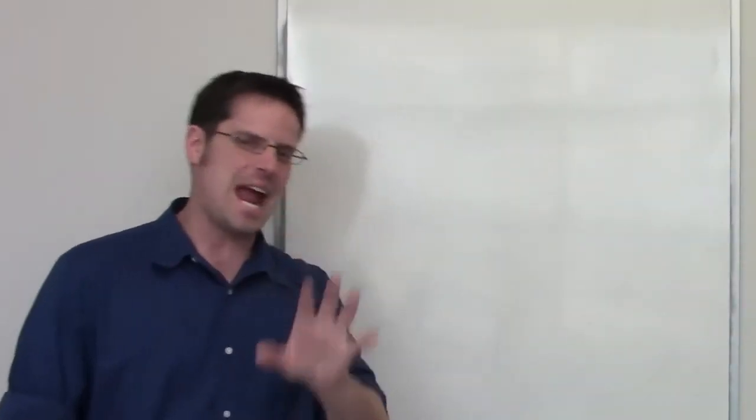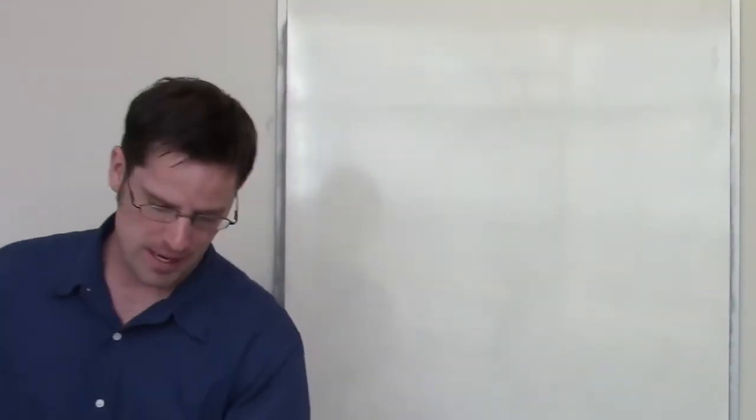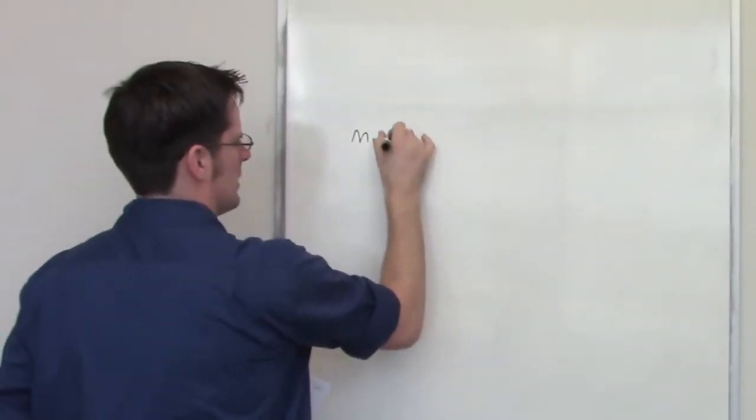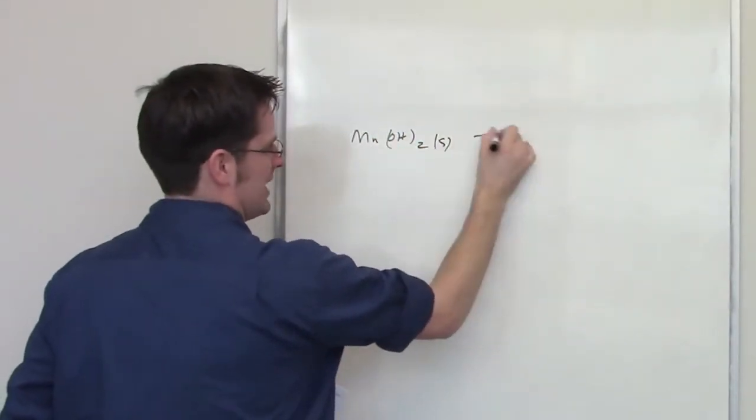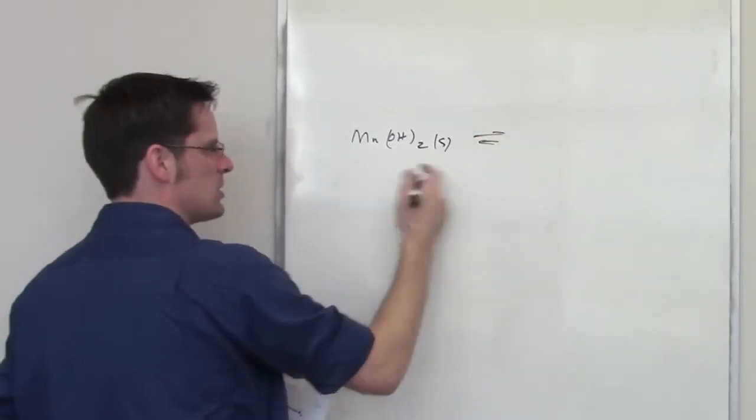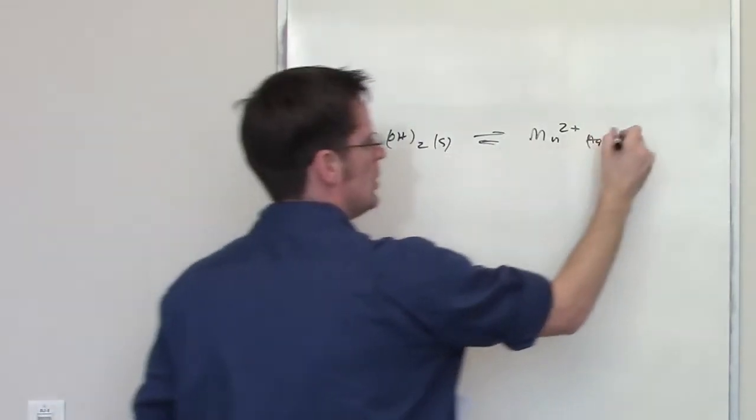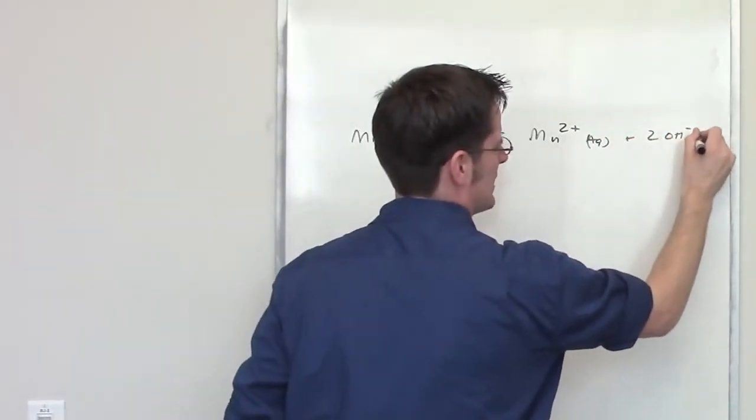The strategy for this problem is exactly the same as the previous problem that I did. We've got manganese hydroxide, and it's of course a solid in an equilibrium setting. It dissociates to form manganese cation plus two molar equivalents of hydroxide anion.